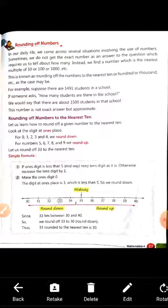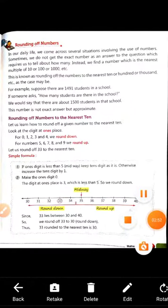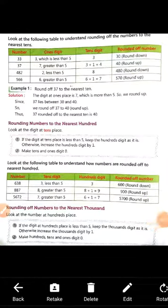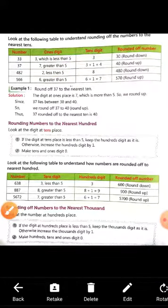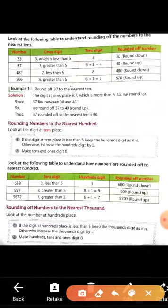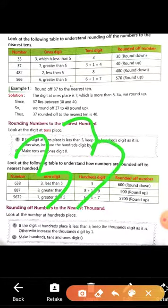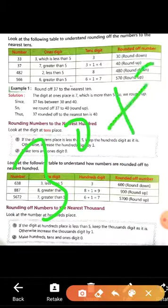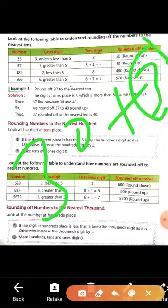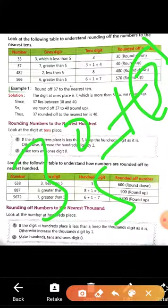Here is an example with a table. Here is the number 33, 37, 482, 566. Now let's see the number 33 is made of 30 plus 3. Here is the 3, 3 is less than 5.